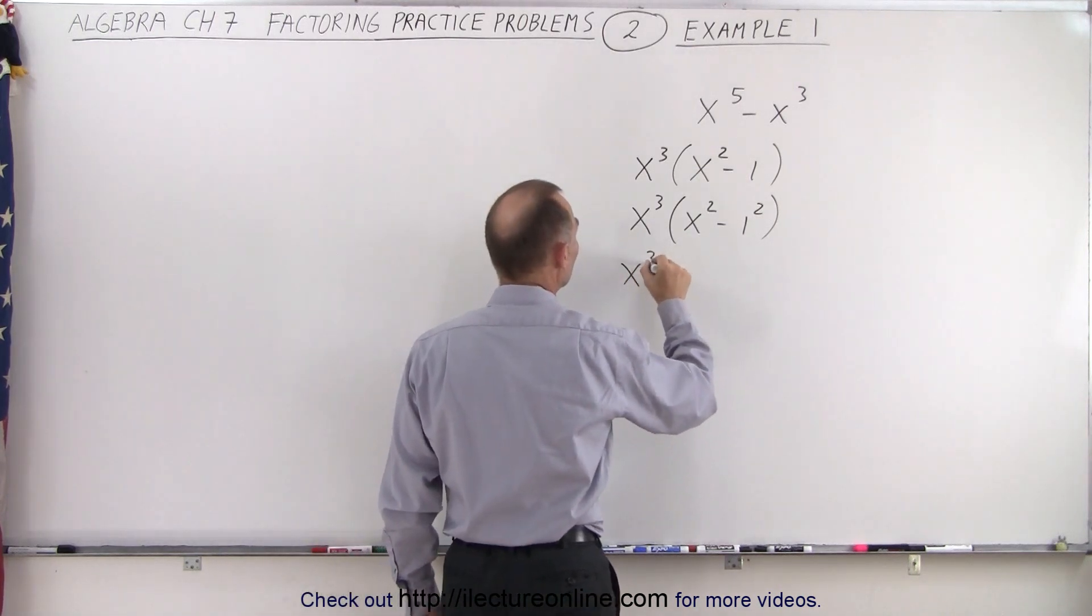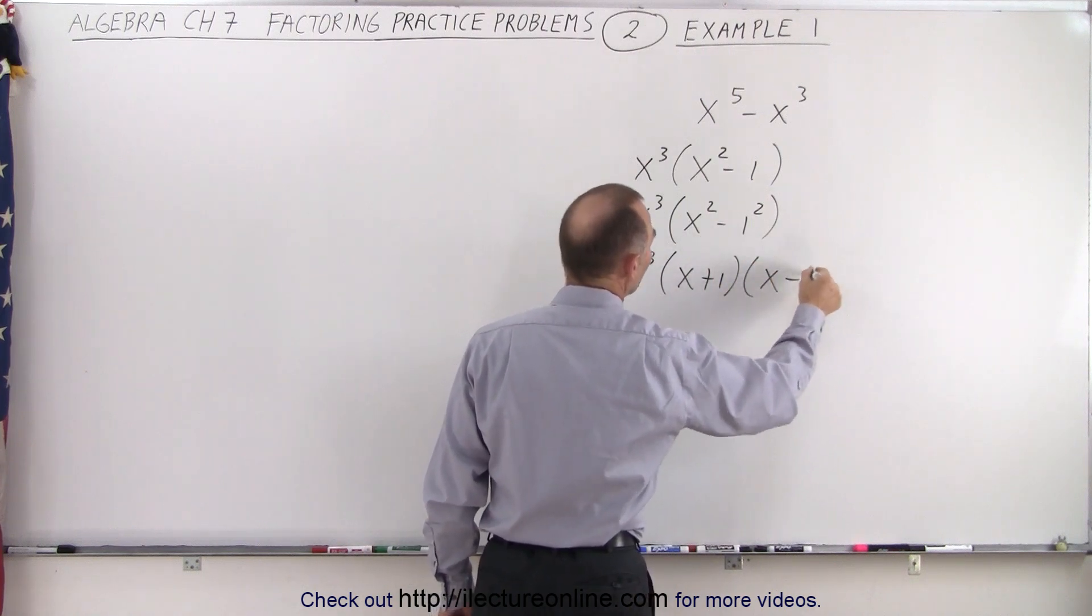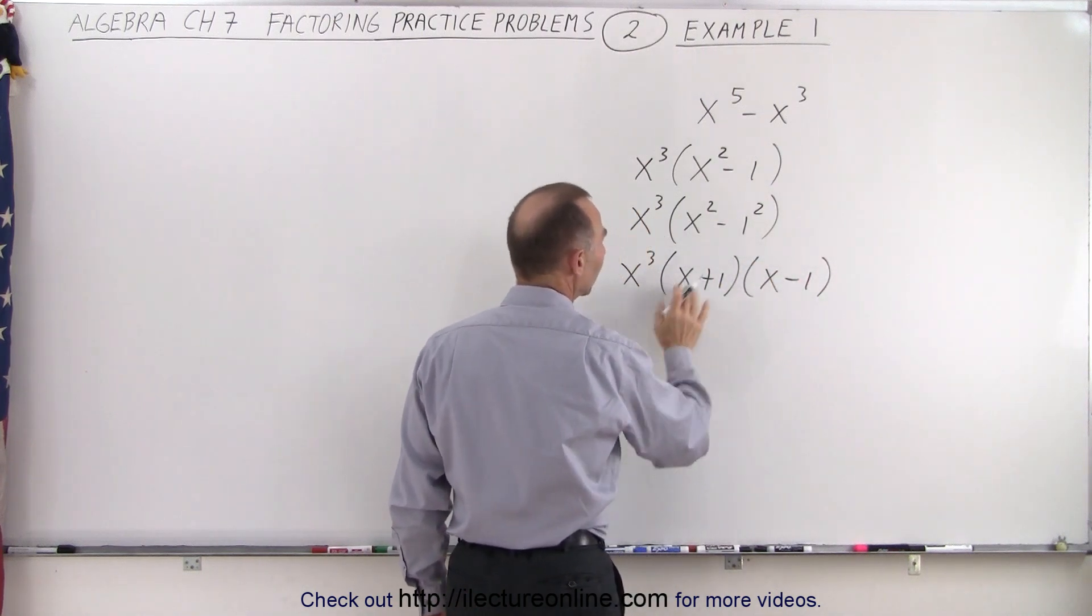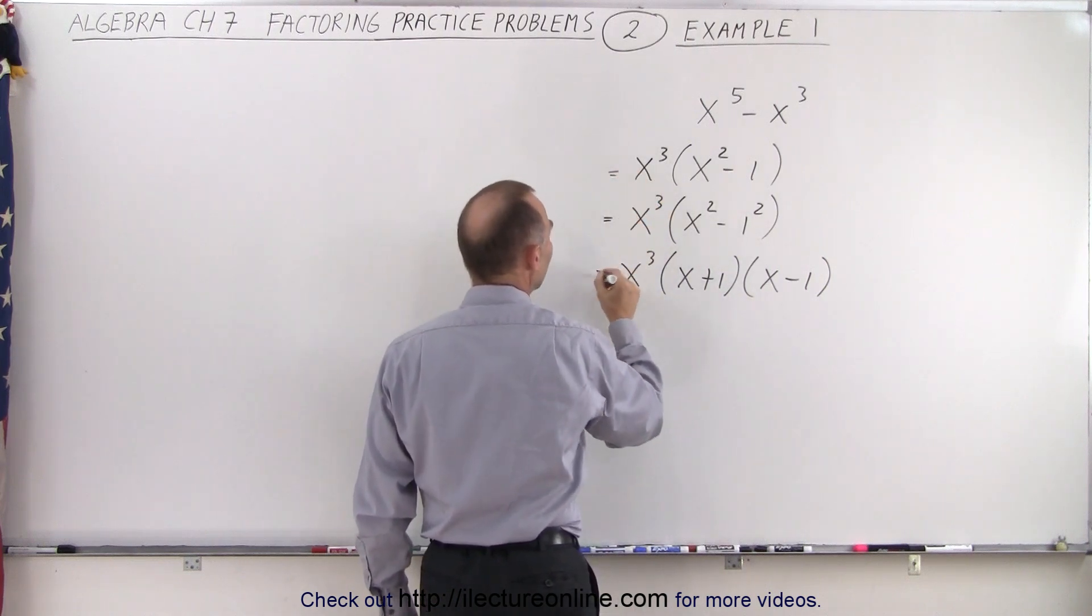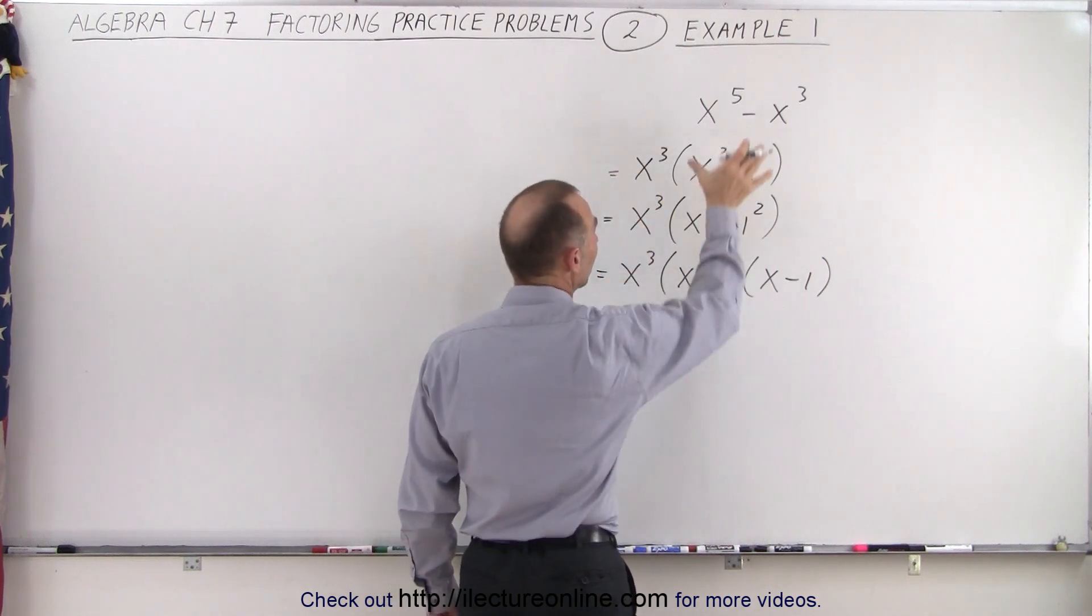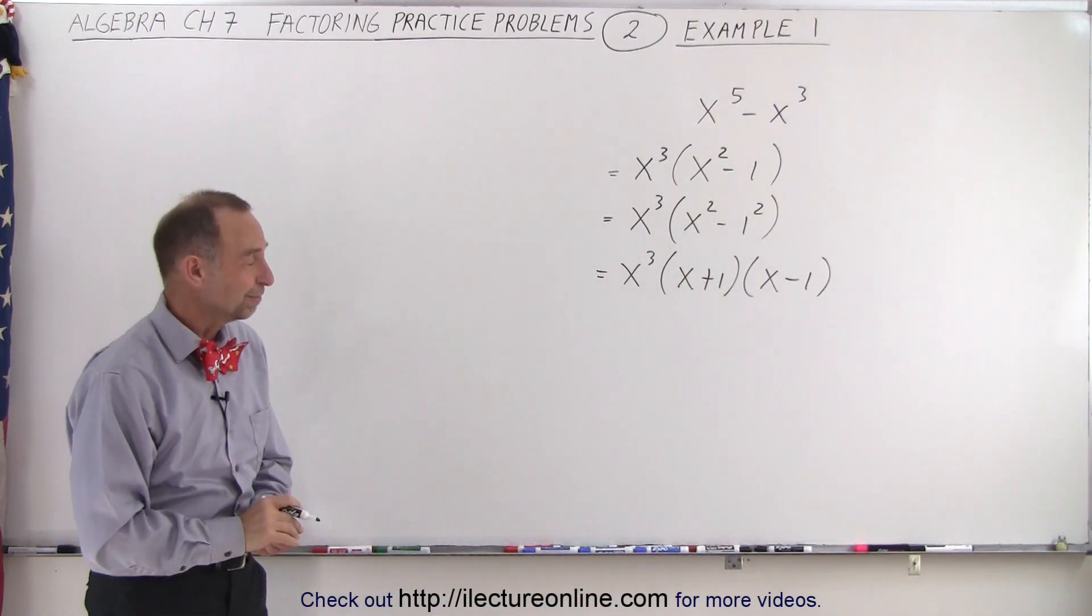This then becomes x cubed times x plus one times x minus one. When we multiply this together, we get back the original amount. So we can go ahead and say that is the factor form of our original problem. And that's how it's done.